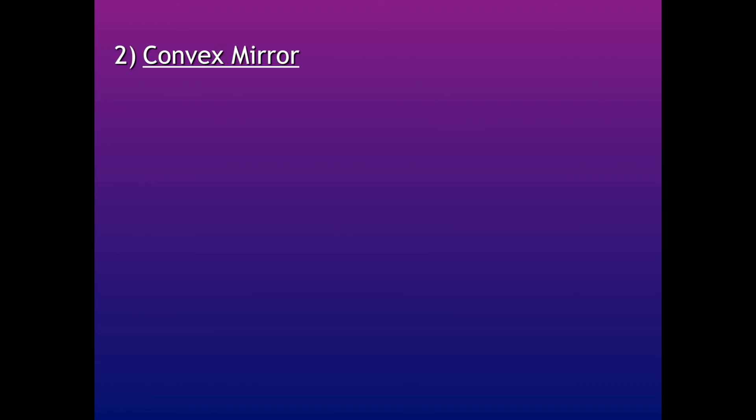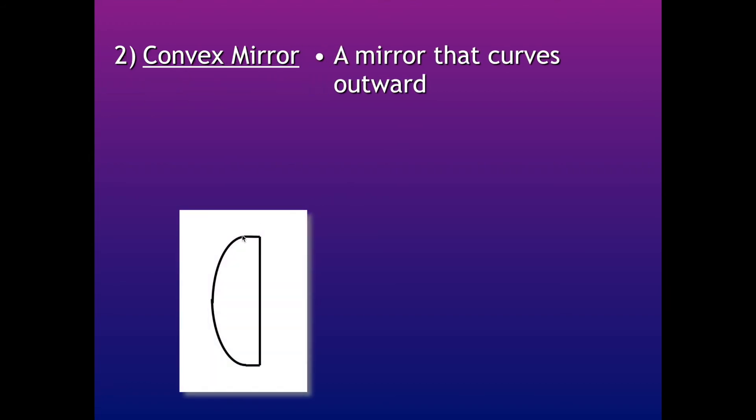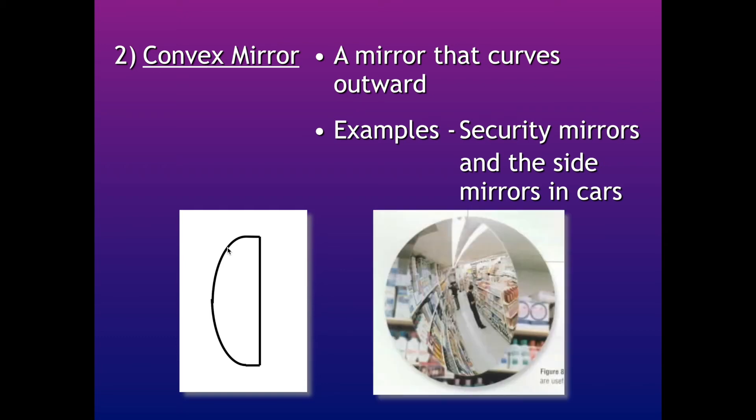So the next type of mirror is called a convex mirror. And it's a mirror that curves outward. It's the opposite of a concave mirror. Here are some examples. Things like security mirrors that you'd see in places like Shoppers Drug Mart. The side mirrors on cars that always says objects in mirror are closer than they appear. Well, that's because this type of mirror is going to spread out the light. It's going to make it look like things are farther away than they really are. And you'll get to see more of the overall scene. So here's an example of that. There's the security mirrors that you'd see in stores.